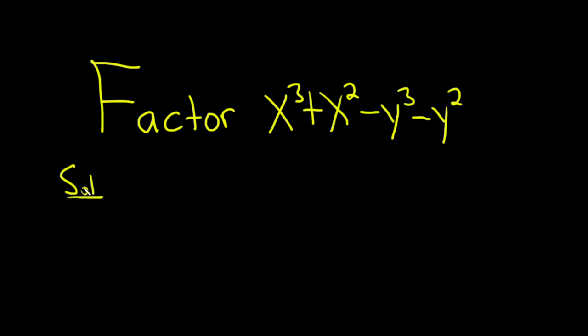Because we have four terms, we're going to try to use what's called factor by grouping. If we were to pull out an x squared here from these two terms, we would get x plus 1. And if you pull out a negative y squared from these two terms, you would get y plus 1.